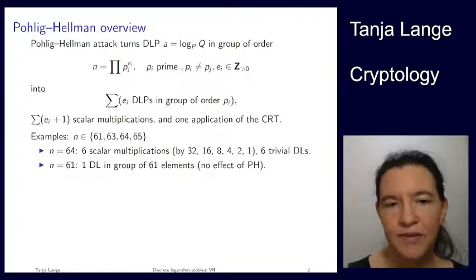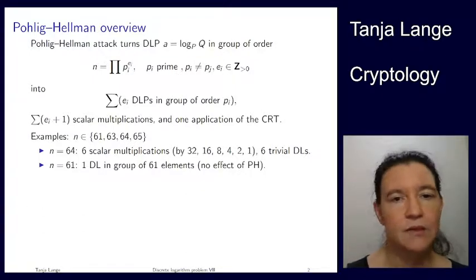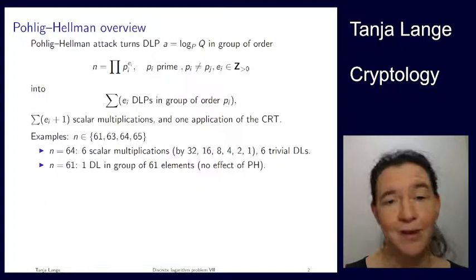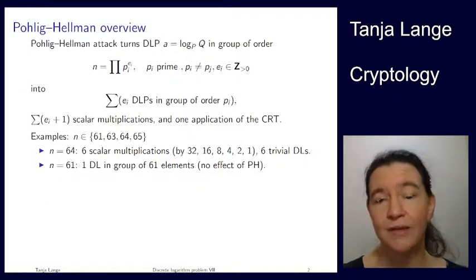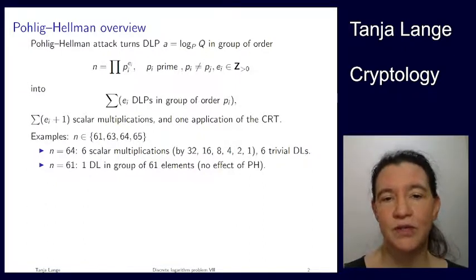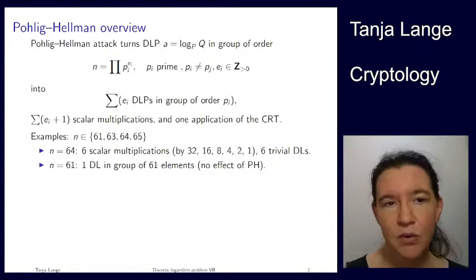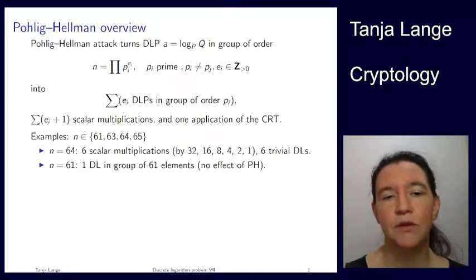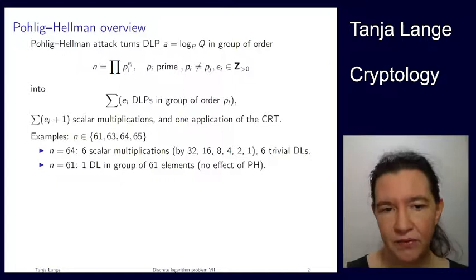Then for 61, that's a prime, and so this whole thing tells me, well, I have to do one discrete log in a group of order 61. Well, I knew that before. So there is no effect of Pohlig-Hellman if the group order is prime. There is a huge effect if the group order is a power of 2.